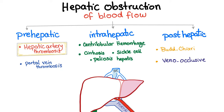Pre-hepatic problems include hepatic artery thrombosis, which is the topic of today, and portal vein thrombosis. Intra-hepatic causes include centrilobular hemorrhage, cirrhosis, sickle cell disease, and something called peliosis hepatis. Post-hepatic causes include Budd-Chiari syndrome, also known as hepatic vein thrombosis, which was discussed in a prior video.